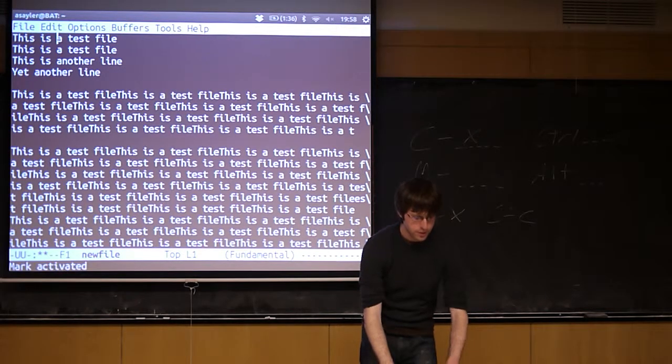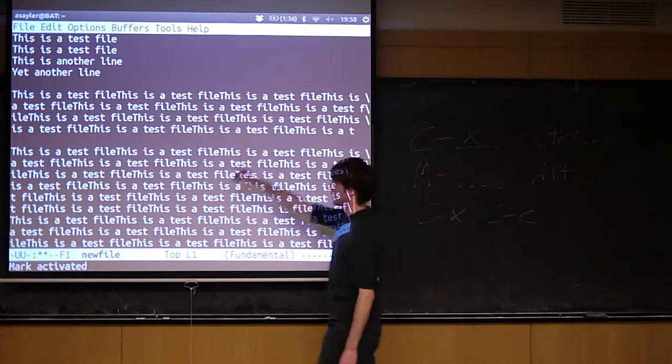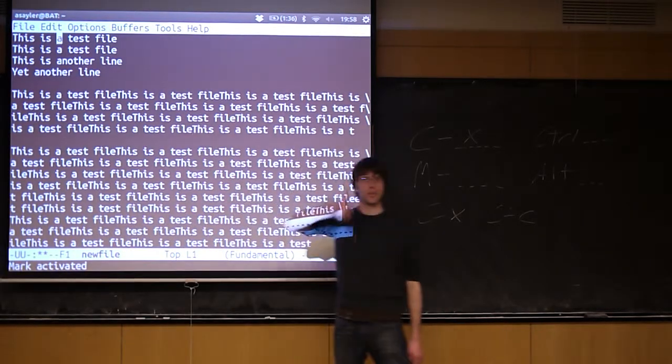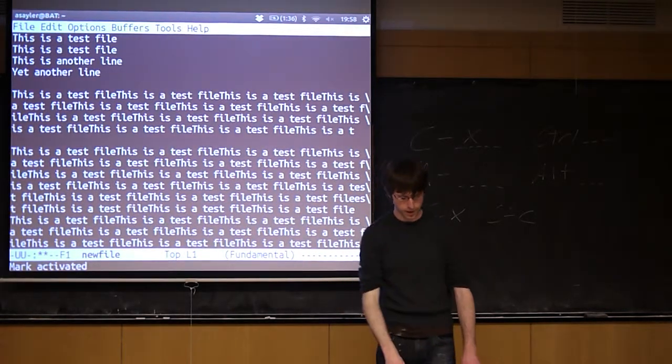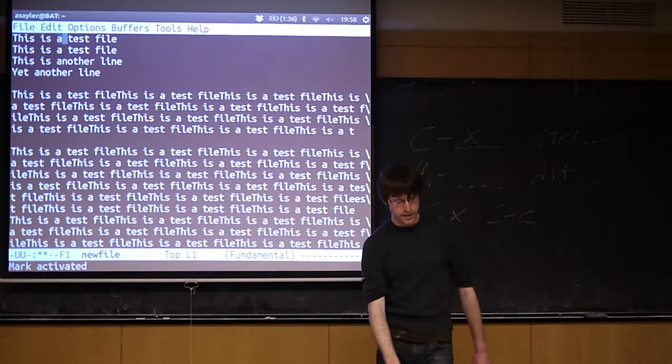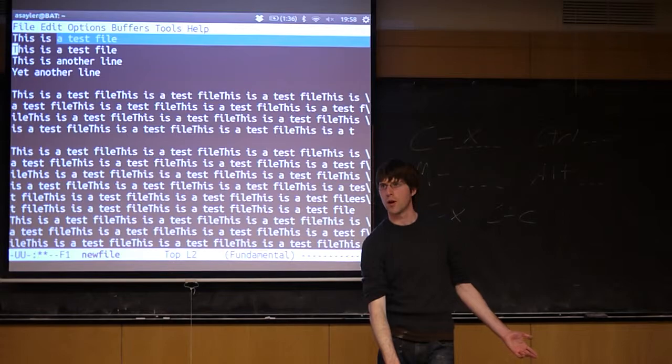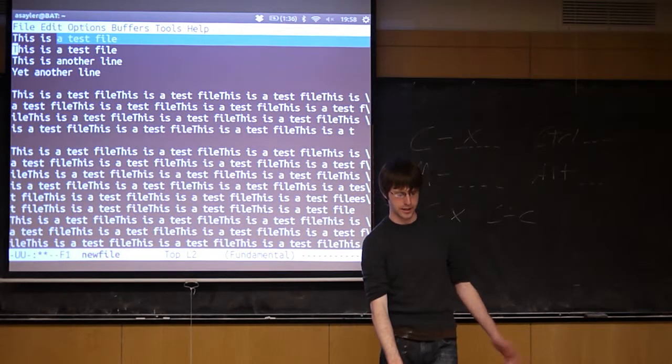So to set a mark, the command is Control-Space. So if I do Control-Space, you'll see this little thing down here says mark activated, and my cursor temporarily changes to a straight line and changed back already. So if I do Control-Space and then I start using the arrow keys, you'll see it's now highlighting from wherever I did a Control-Space to wherever my cursor currently is.